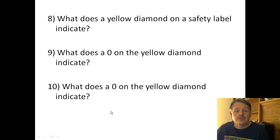So what does yellow mean? Well, that's reactivity—how much something is going to react with something else. A zero means it doesn't react. Something like gold, for example, does not react very well, so it might be a zero or a one.